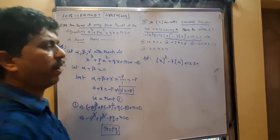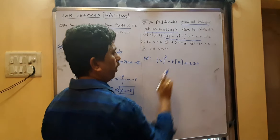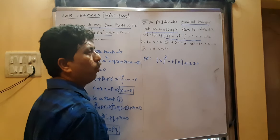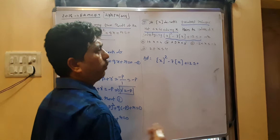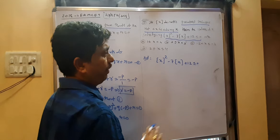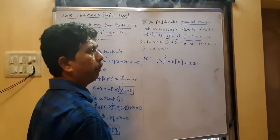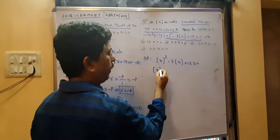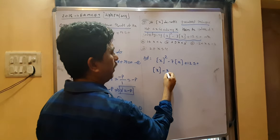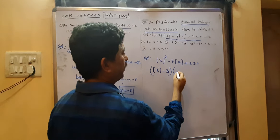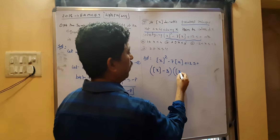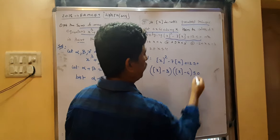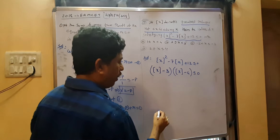We can directly do the factorization. 1 times 12 equals 12; factors with sum −7 are −4 and −3. So this can be written as ([x] − 3)([x] − 4) ≤ 0.